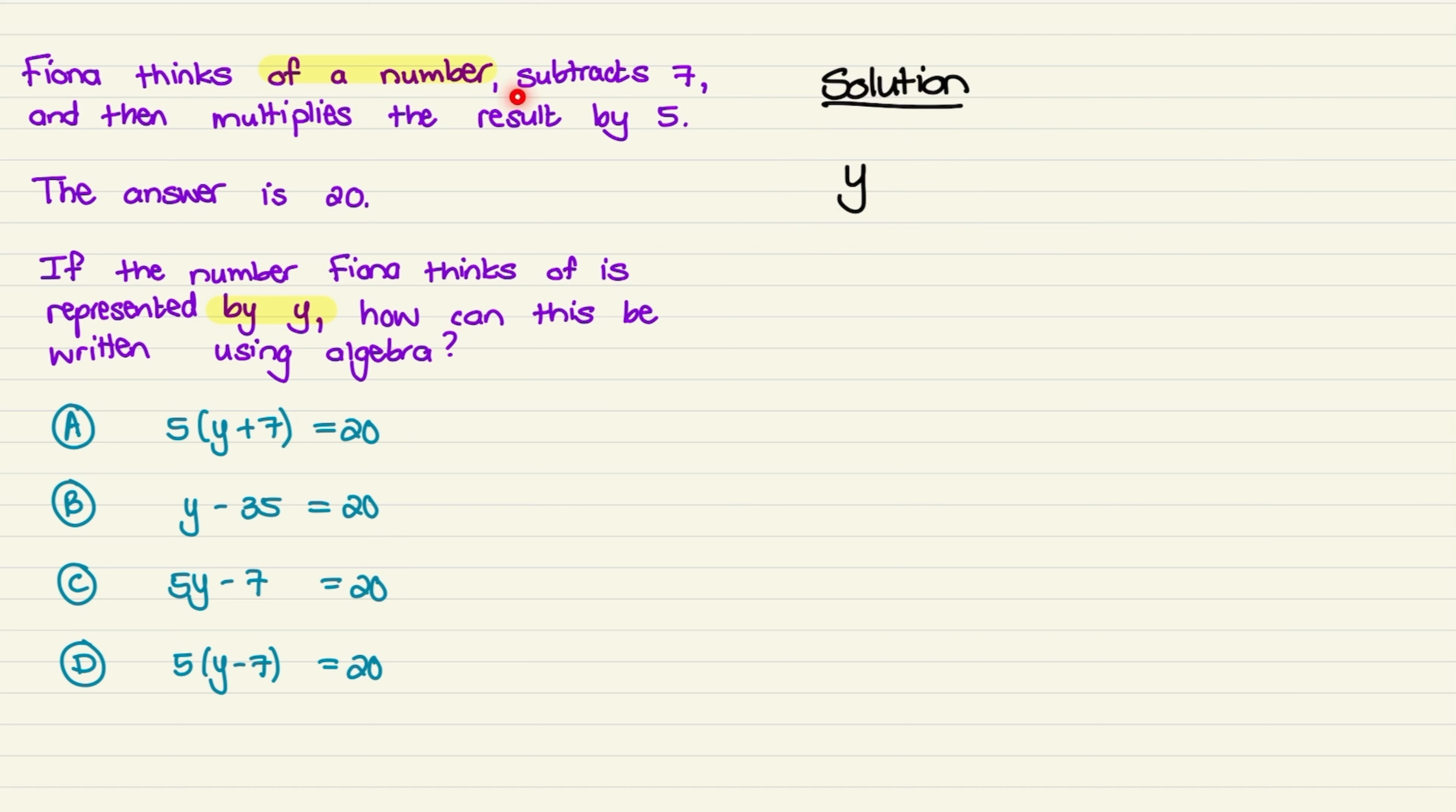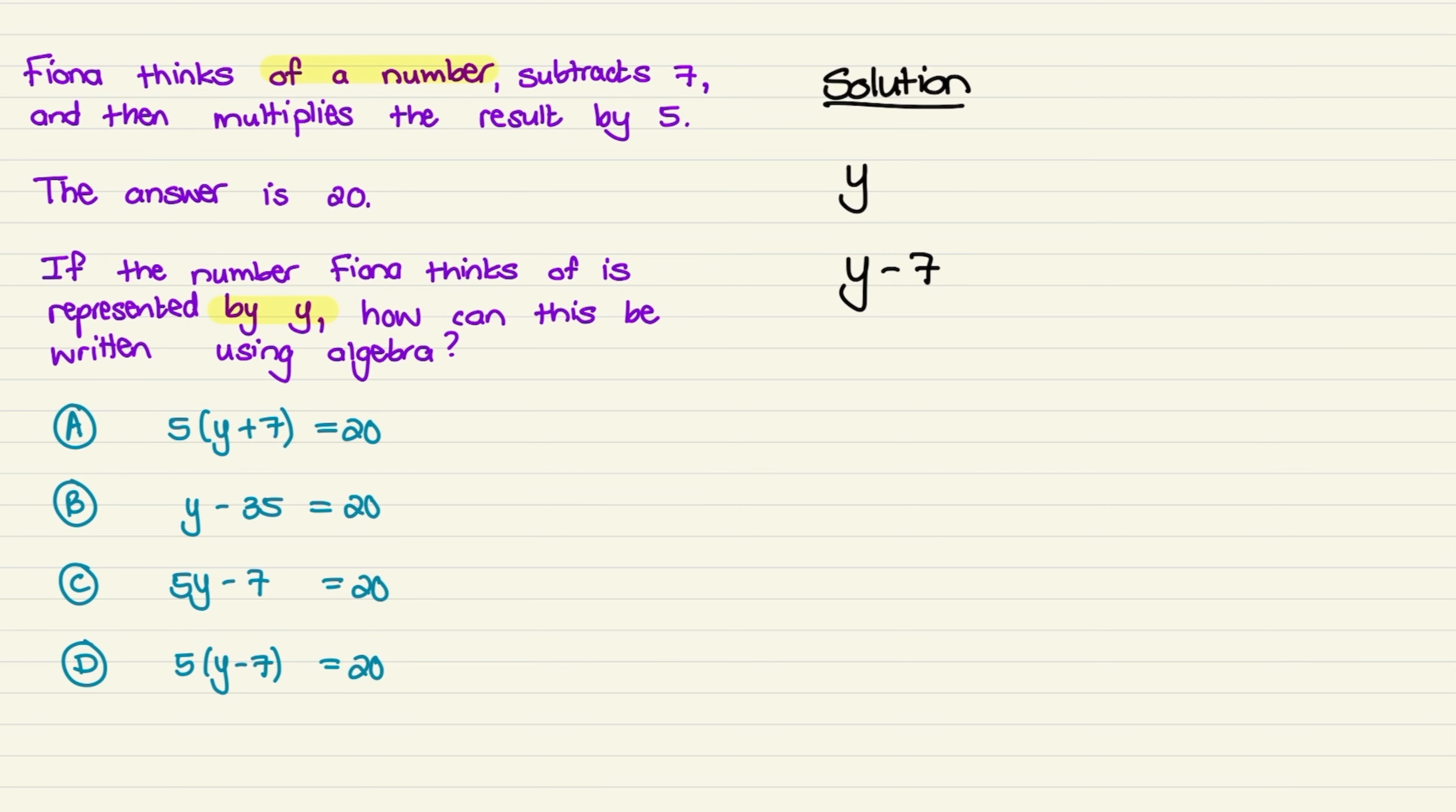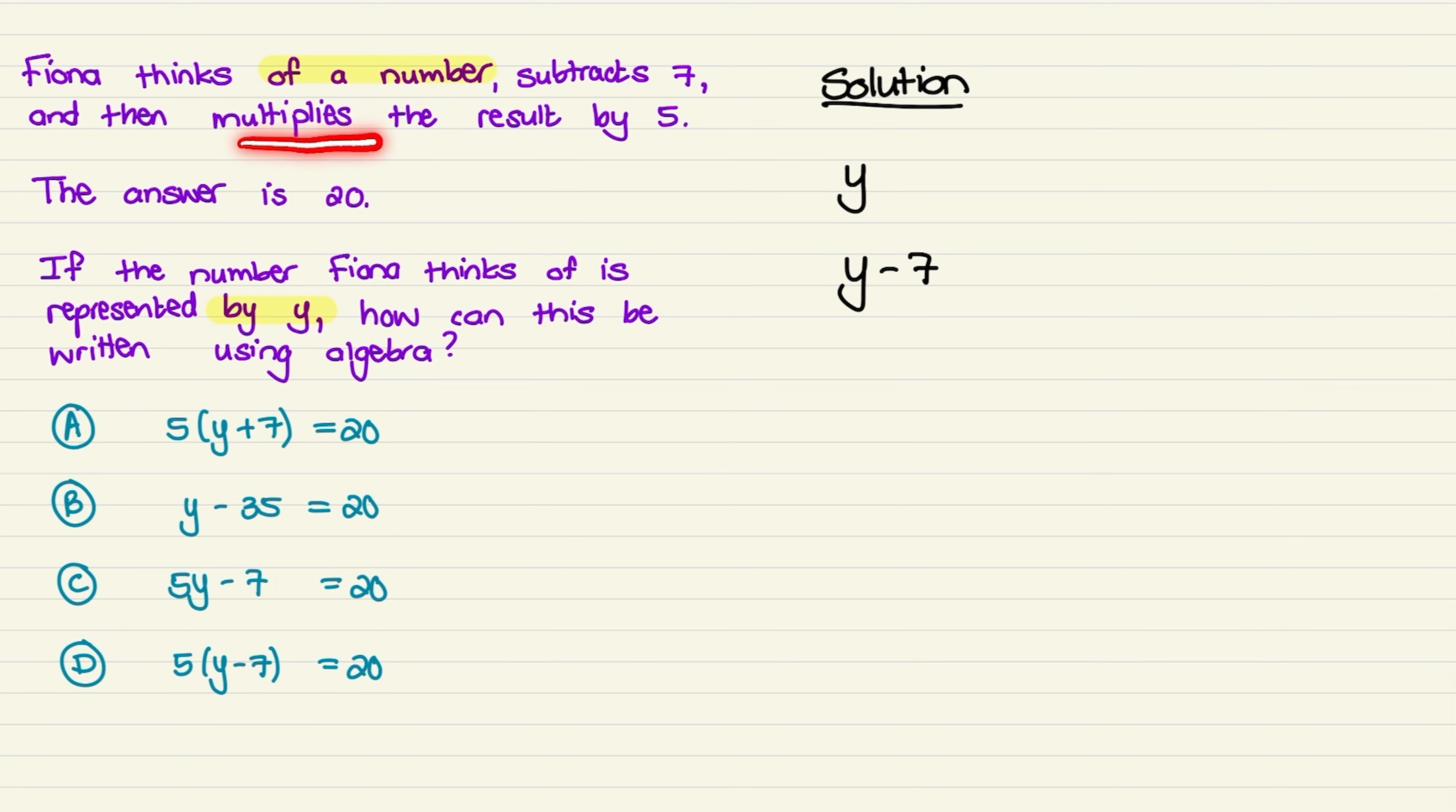Next it says she subtracts 7 from that number, so this becomes y minus 7. Thereafter, it says, then multiplies the result by 5.